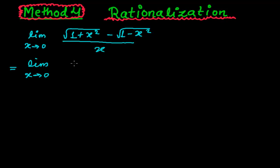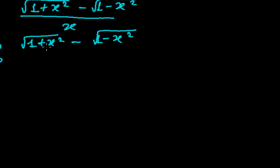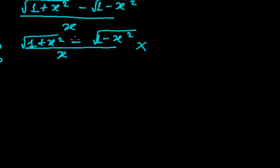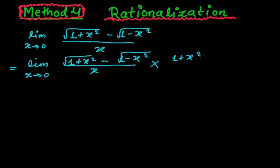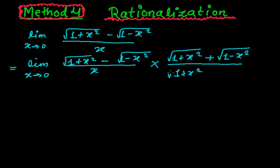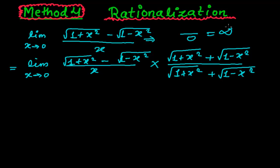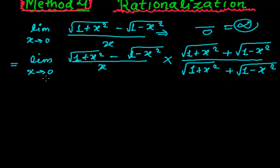So: limit as x tends to 0 of [√(1 + x²) − √(1 − x²)] divided by x. We rationalize by the numerator — the sign changes, so we multiply by √(1 + x²) + √(1 − x²). We do this because if we just plug in x = 0, the denominator becomes 0, giving an undefined form.